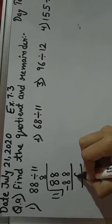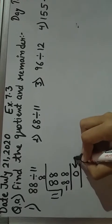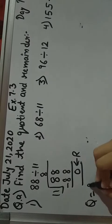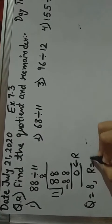8 minus 8 is 0, 8 minus 8 is 0. So your quotient is here 8 and remainder is here 0.